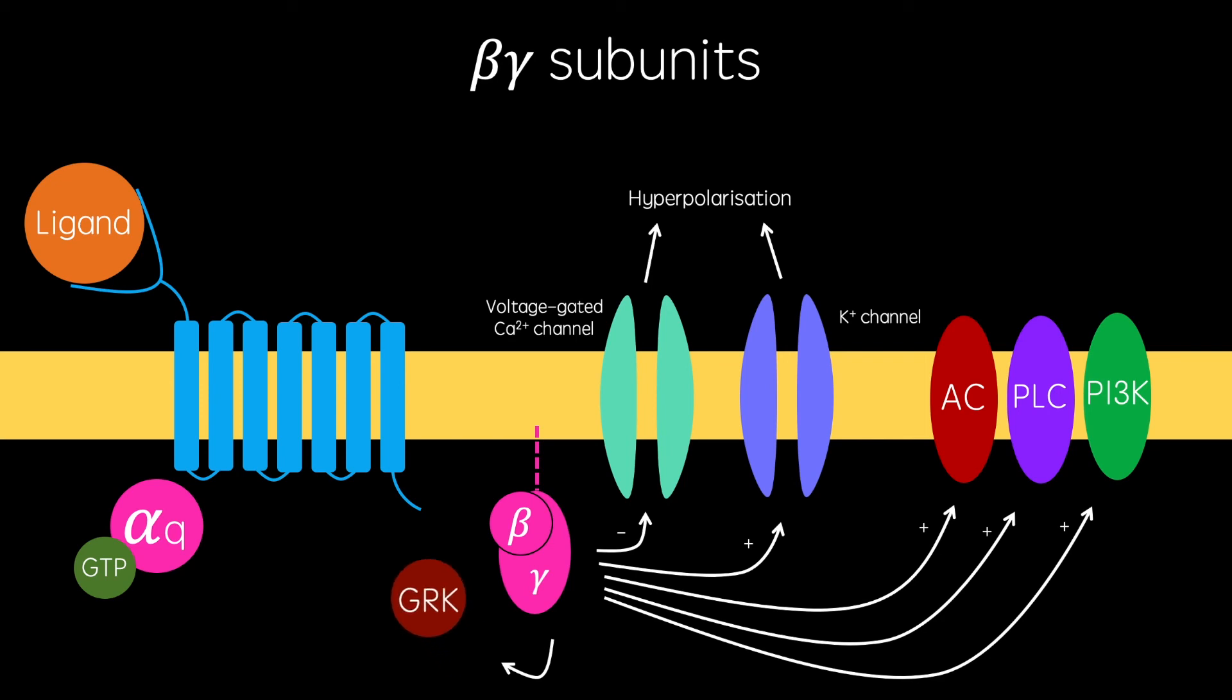GRK phosphorylates the third intracellular loop on the GPCR where the G protein usually binds. This allows arrestin molecules to bind here instead, blocking the G protein from doing so. This prevents the receptor from being activated and is a vital step in GPCR desensitization.